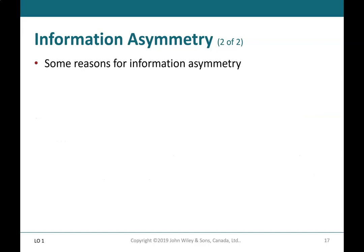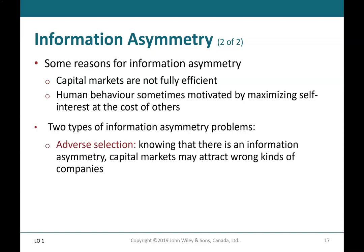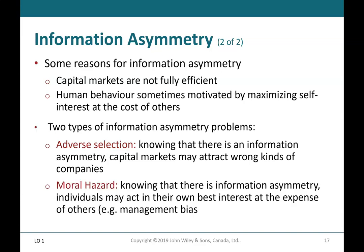Some reasons for information asymmetry are that capital markets are not fully efficient, and human behavior is sometimes motivated by maximizing self-interest at the cost of others. Two types of information asymmetry problems: adverse selection — knowing that there is an information asymmetry, capital markets may attract the wrong kinds of companies; and moral hazard — knowing that there is information asymmetry, individuals may act in their own best interests at the expense of others, e.g., management bias.